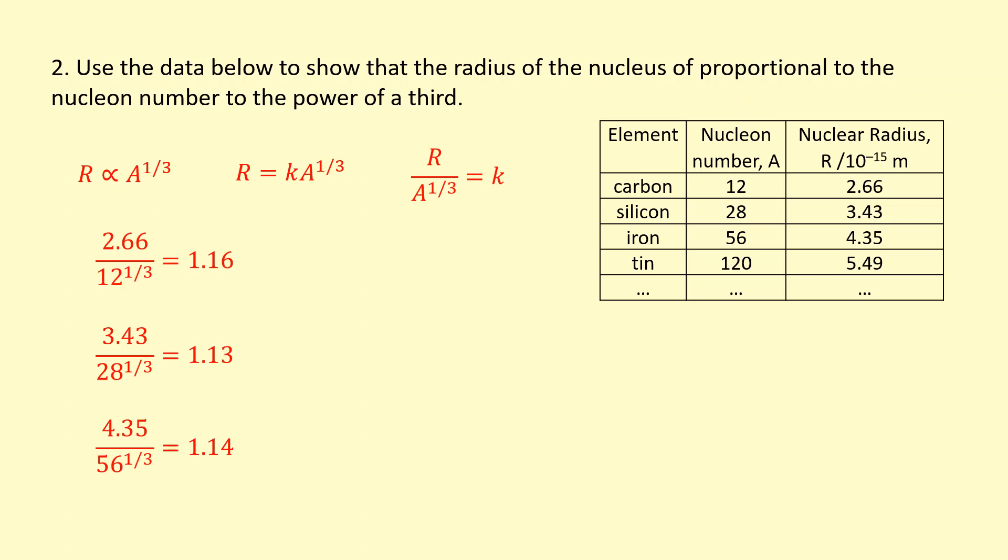That means the relationship is most likely going to be true. So I write a conclusion. The numbers are similar. These constants are similar. We expect it to be a constant. So the radius is indeed proportional to the nuclear number to the power of a third.